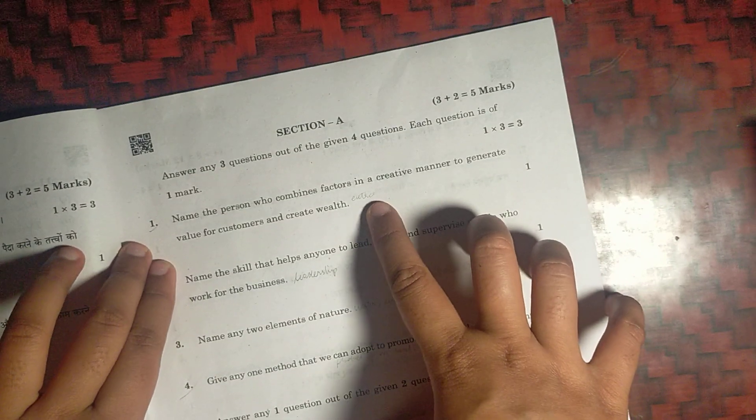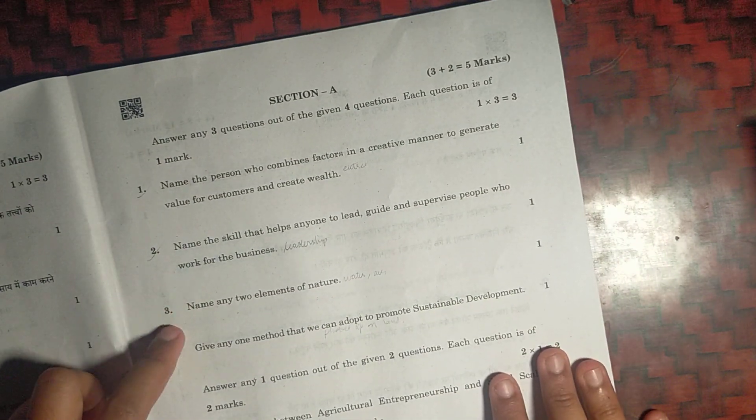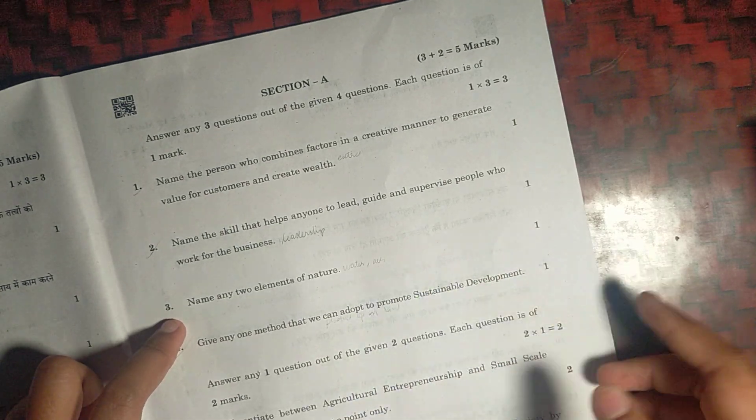First question, it will be entrepreneur. Second one, the skill required is leadership skill. Two elements of nature, you can write any two like water, air.